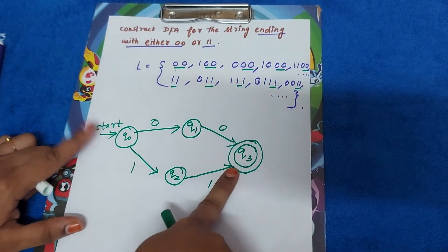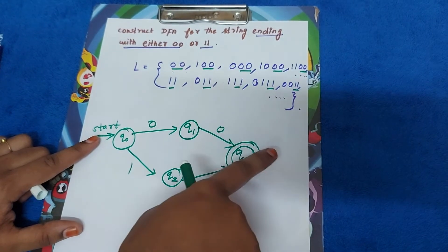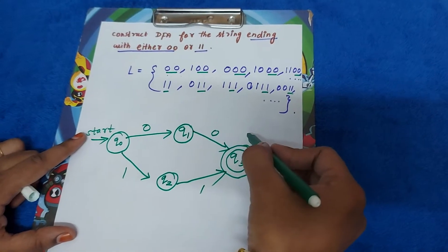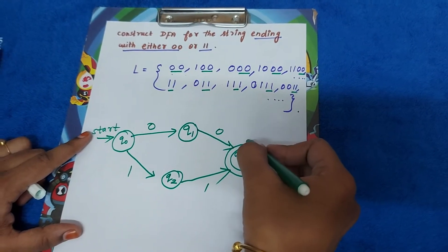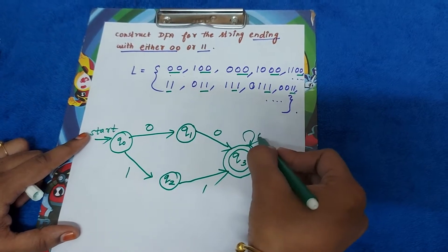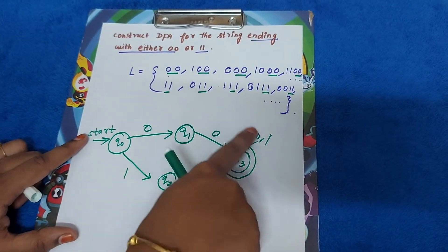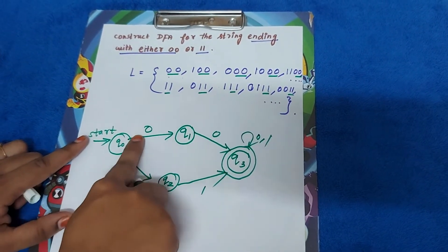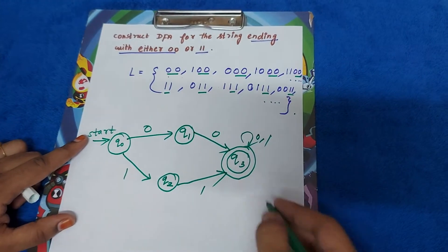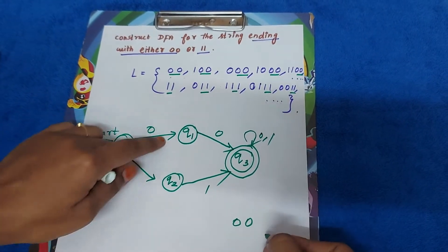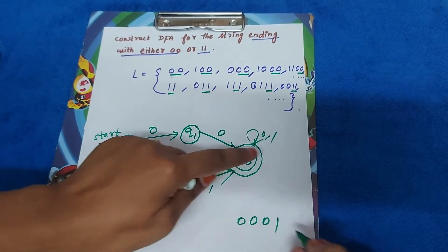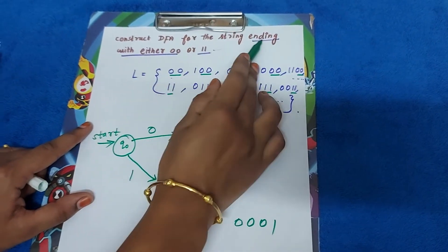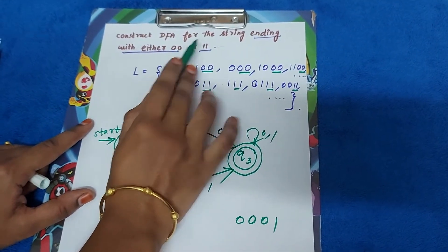Let's check for acceptability. Zero-zero: it is accepting zero-zero. One-one: it is accepting one-one. Now what about other strings? If we make zeros and ones with a self-loop here, let's check — zero-zero might turn into zero-zero-zero, or zero-zero-zero-one. Our condition is ending with double zero or double one.